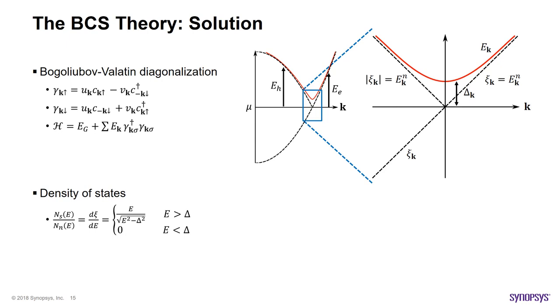To see how, let's go back to the Hamiltonian and diagonalize it. We can do that using the so-called Bogolyubov-Valatin transformation, which defines two new creation and annihilation operators, gamma-dagger and gamma, as a linear combination of normal operators, making use of the U and V coherence coefficients. The diagonalized Hamiltonian is made up of the ground state energy and the contributions from the excited states.